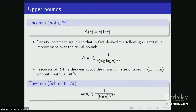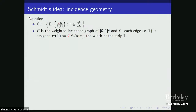Not much progress was made on the upper bound side of the problem until Schmidt in the 70s improved on Roth's argument. The numerology is tantalizingly similar to the bound for AP-free sets — just a coincidence, however. Schmidt in 1972 managed to turn the log log factors into a log factor. His argument represents an important moment for this problem: after this paper, the Heilbronn triangle problem becomes really a problem in incidence geometry. I want to sketch what Schmidt is doing.